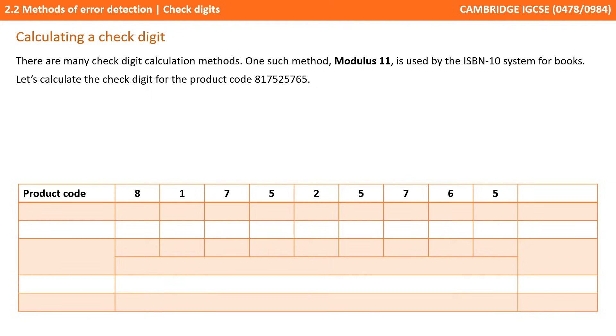There are many different check digit calculations which can be used. One such method is called Modulus 11, and it's used by the ISBN 10 system for books. Let's calculate the check digit for the product code 817525765.